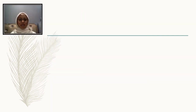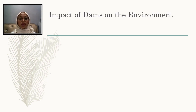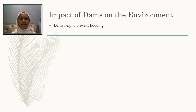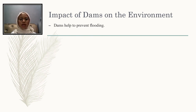Next, we move to the impact of dams on the environment. First, dams help to prevent flooding. While benefiting farmers, dams also help to prevent loss of life and property caused by floods. Flood control dams impound flood water and then either release it to the river below the dam in a controlled manner, or store and divert water for other uses. Humans have built dams for centuries to help control catastrophic floods.